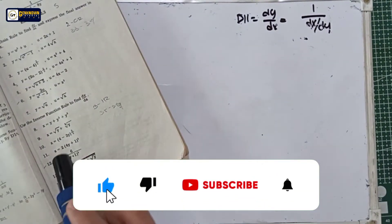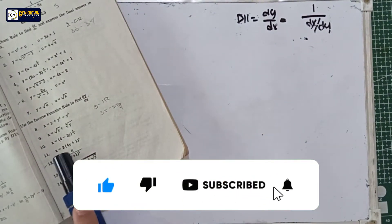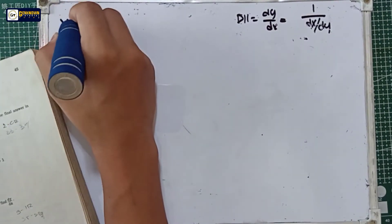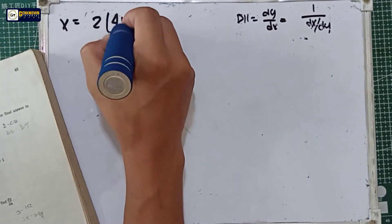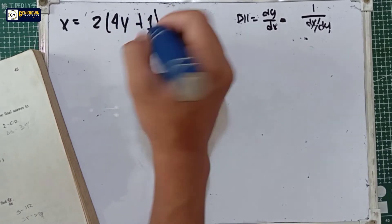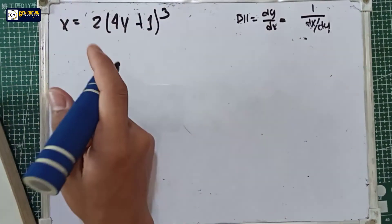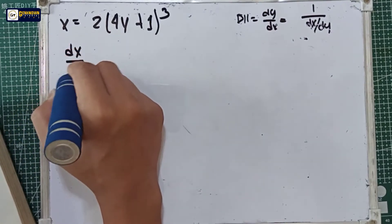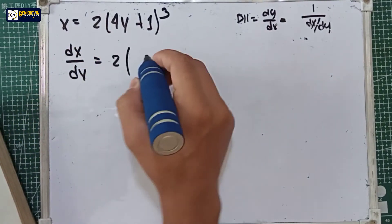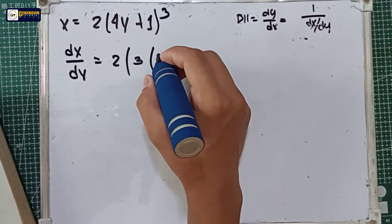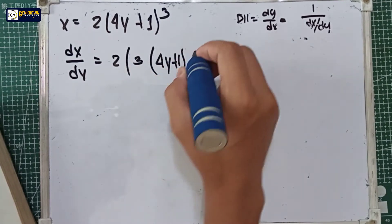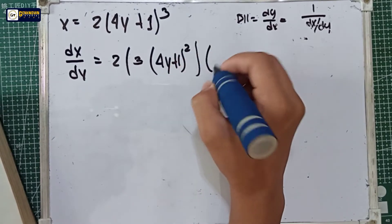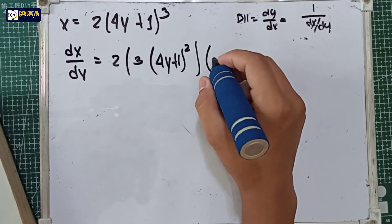In number 4, we have x is equal to 2 multiplied by (4y + 1) raised to 3. We will be deriving the x equation with respect to y. So dx over dy is equal to 2 multiplied by 3, multiplied by (4y + 1) raised to 3 minus 1, multiplied by the derivative of 4y + 1, which is equal to 4.